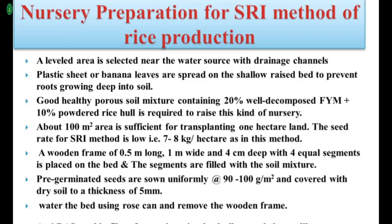Raised beds are made, and a plastic sheet or banana leaf layer is spread on them so that growing roots do not go too deep into the soil — preventing root damage at transplanting time. The soil used for nursery preparation in the SRI method should be healthy, mixed with 20% well-decomposed FYM and 10% powdered rice hull. About 100 square meters of nursery area is sufficient for transplanting 1 hectare, and the seed rate in the SRI method is 7 to 8 kg per hectare.